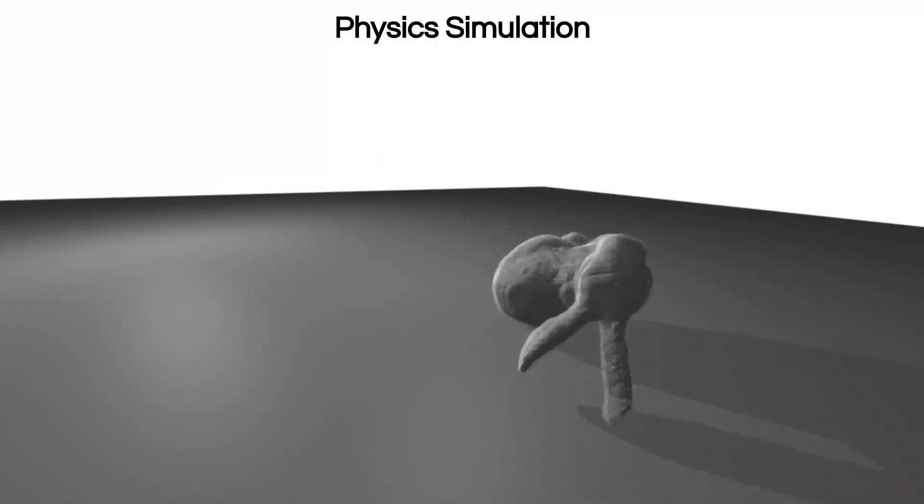Once augmented with dynamics properties, such as mass and friction coefficients, we can simulate the physical behavior of a neural object. Here, we throw the Stanford bunny onto the ground to illustrate contact between a Dynamics Augmented Neural Object and a plane. In this animation, the neural object is represented by a level set of its density field.